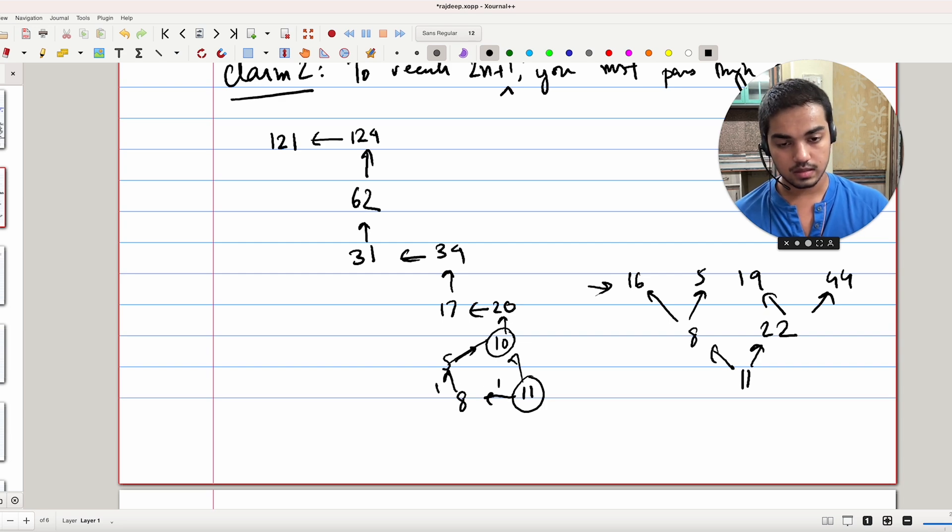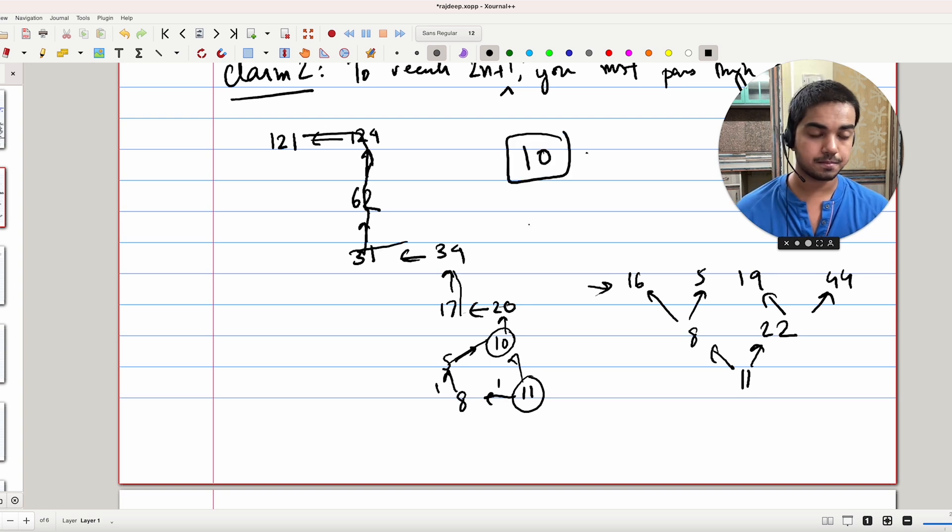So the final answer will be: 11 to 8 which is 1, 8 to 5 which is 1, 5 to 10, 10 to 20, 20 to 17, 17 to 34, 34 to 31, 31 to 62, 62 to 124, 124 to 121. Final answer is 11 steps. I hope you enjoyed this video, and thanks for watching.